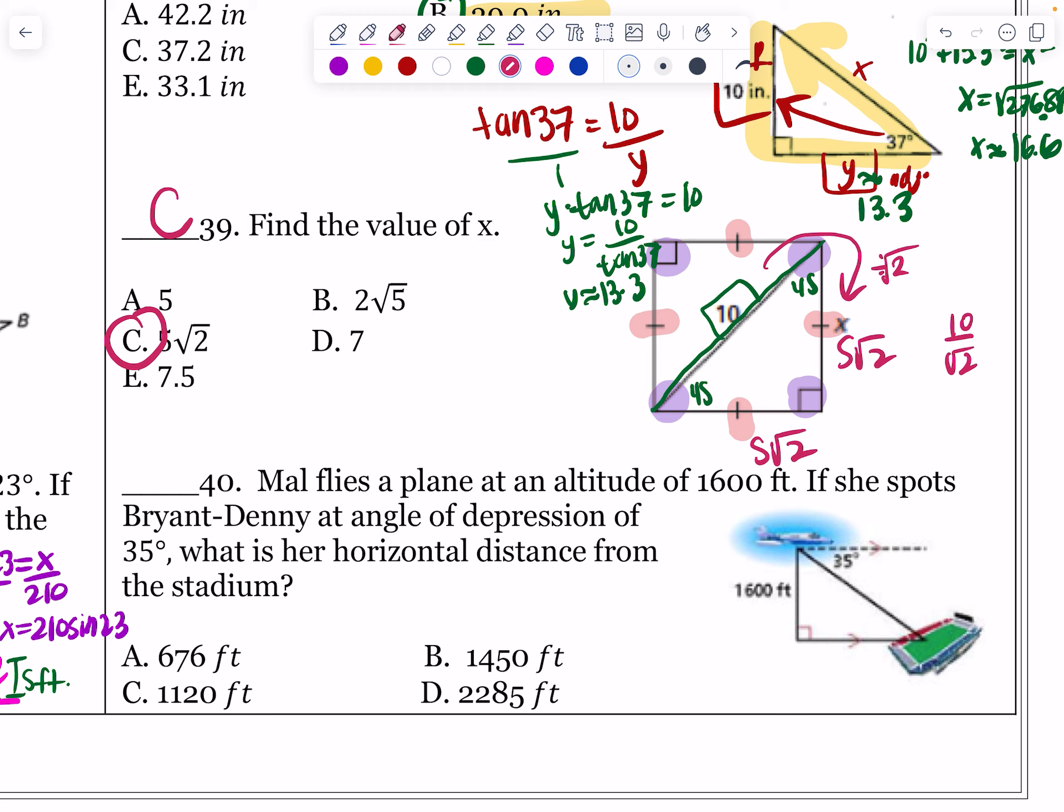Last one, Mal flies a plane at an altitude, meaning how high it is above the ground, of 1,600 feet. She spots Bryant-Denny at an angle of depression of 35 degrees. Well, where else can I copy that? I can always turn an angle of depression into an angle of elevation by copying that into the triangle. What is her horizontal distance from the stadium? Remember, horizontal is this way, facing left to right. So I'm going to put an X there. So from 35, I've got my opposite, I've got my adjacent. That's going to be a tangent.